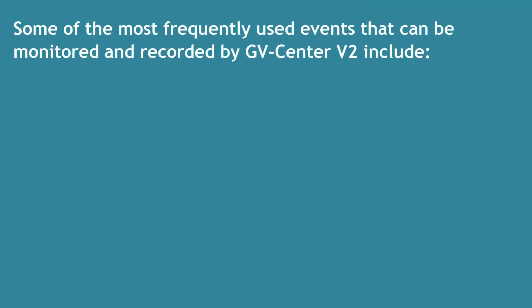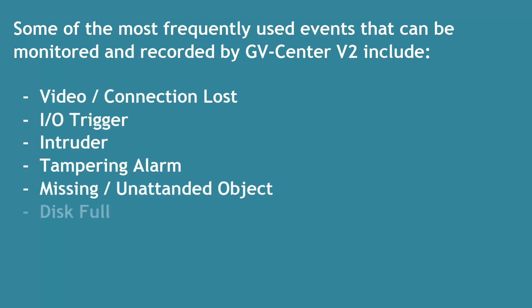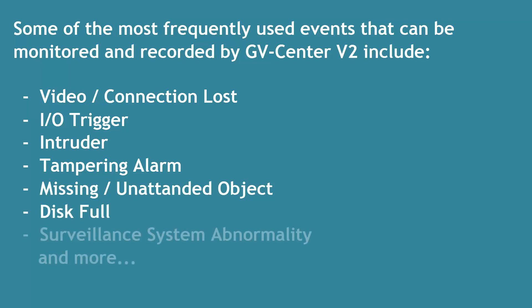Some of the most frequently used events that can be monitored and recorded by Center V2 include video connection lost, IO trigger, intruder, tampering alarm, missing or unattended object, disk full, surveillance system abnormality, and more.